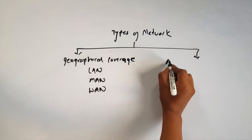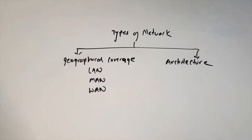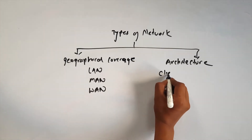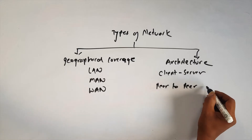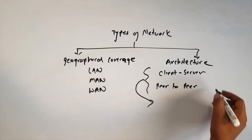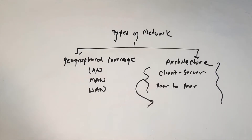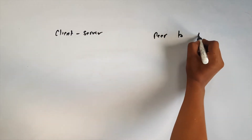We will look at other types of network architecture. On the basis of network design, we categorize into client-server architecture and peer-to-peer architecture. A modern-day example is cryptocurrency — that is the best example of peer-to-peer network design.